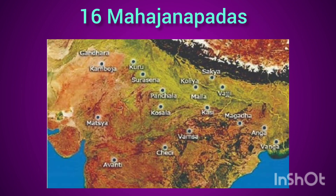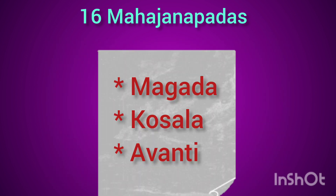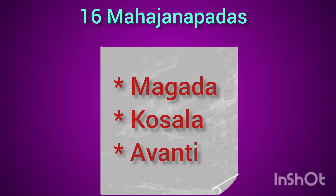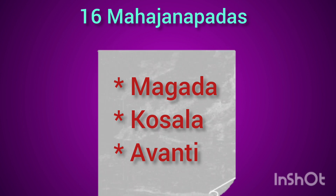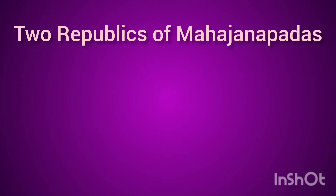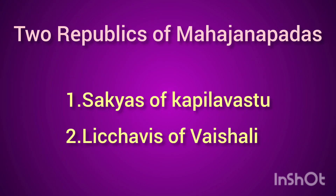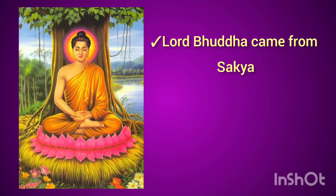In 7th century BC, there were 16 great powers called Mahajanapadas. The important kingdoms of Mahajanapadas were Magadha, Kosala, and Avanti. There were two republics: the Sakyas of Kapilavastu and the Licchavis of Vaishali.